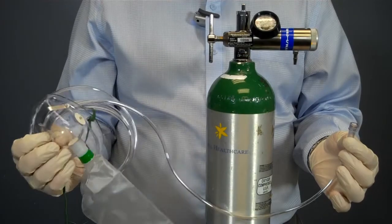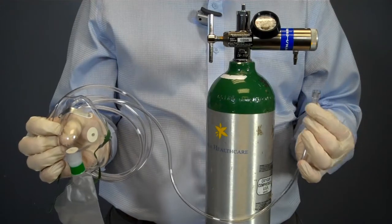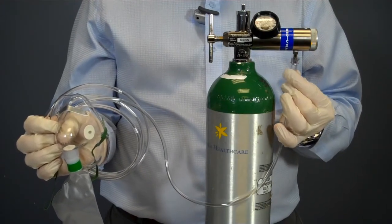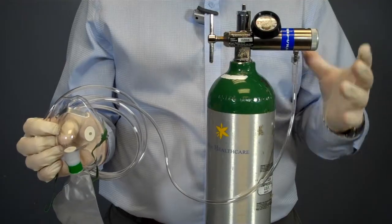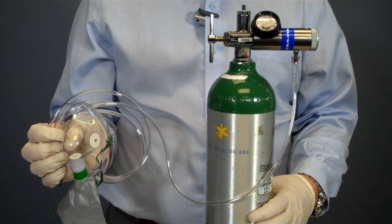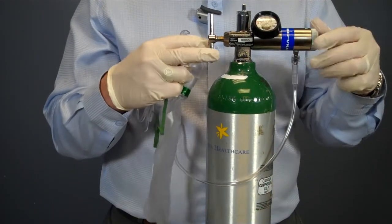Now I need to attach a non-rebreather mask to the tank and prepare it for patient use. After checking the packaging and mask for tears, punctures, or missing pieces, I pull out the tubing and attach it to the port valve on the regulator.